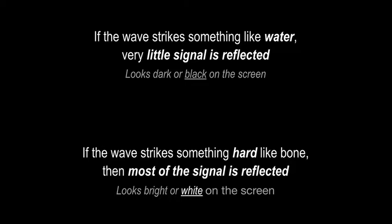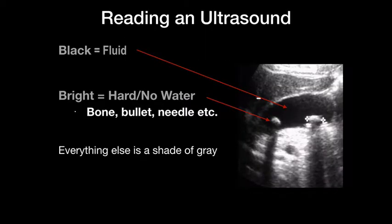To make this simple: if that sound wave hits something soft like water, it produces a black image on the screen. If it hits something hard like bone, a lot of the sound wave is sent back and it produces a bright image. So water on ultrasound is black, and hard things like bones, bullets, or needles are very bright. Here's a picture of a gallbladder — you can see the fluid inside is black, and the gallstone sitting in the fluid is very bright and easy to see.